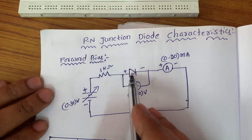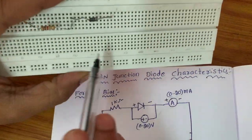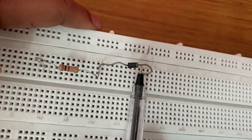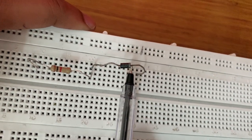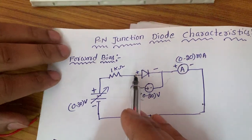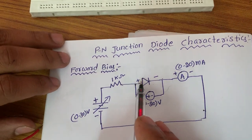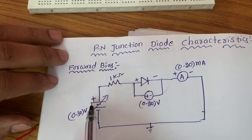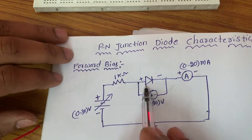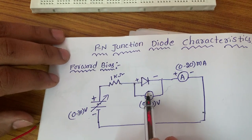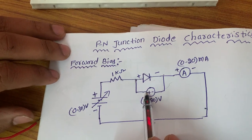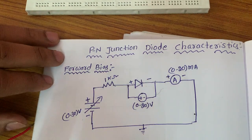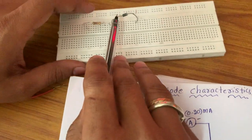This is the PN junction diode. It is a diode having two terminals — it is a P-type and the N-type, it is the anode and it is a cathode. For this circuit, we are connecting one resistor in series, that is a 1 kilo ohm resistor. It has an RPS positive and RPS negative. This voltmeter is used to measure the voltage across the diode and this ammeter is used to measure the current passing through the diode.